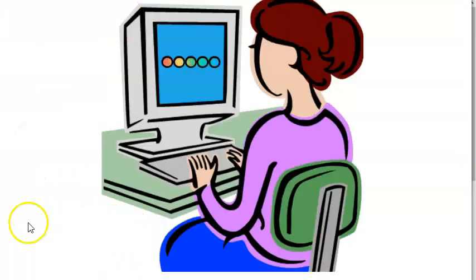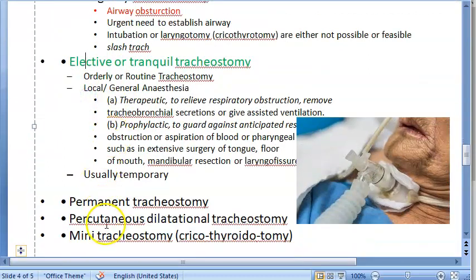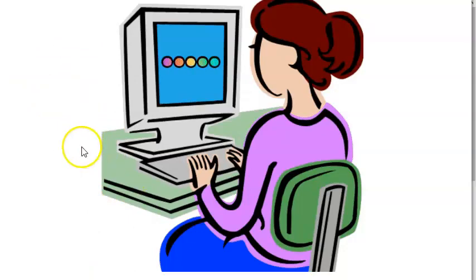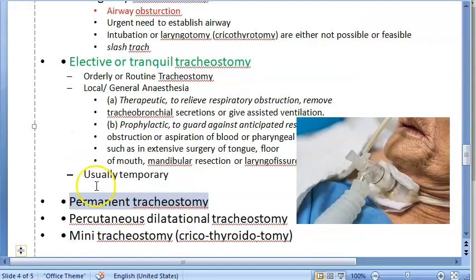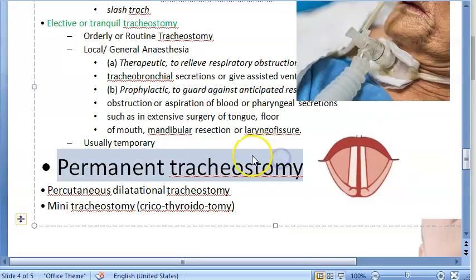We have finished looking at emergency and elective tracheostomy. Now let's go to permanent tracheostomy. Another way of dividing tracheostomy types is temporary versus permanent. The third type here is permanent tracheostomy.